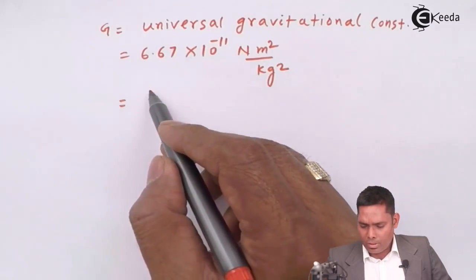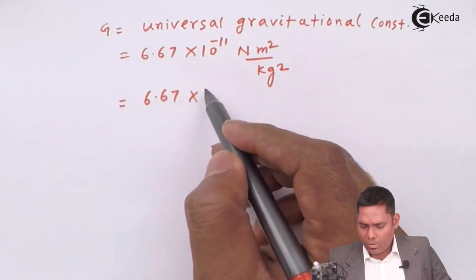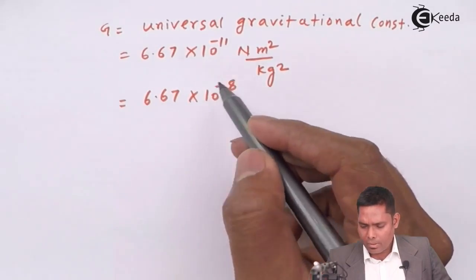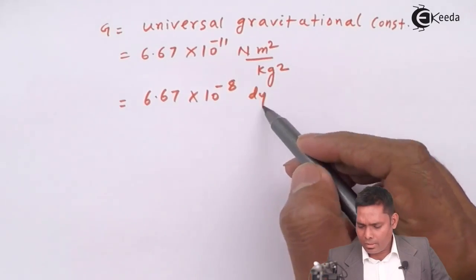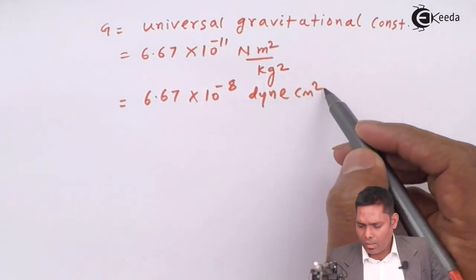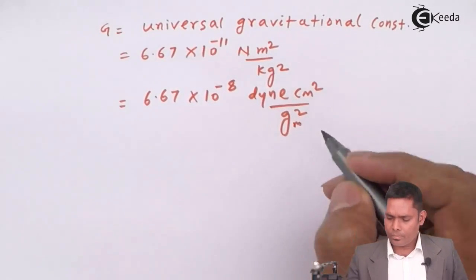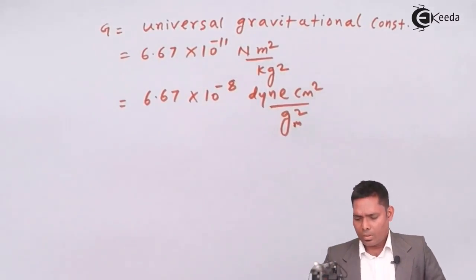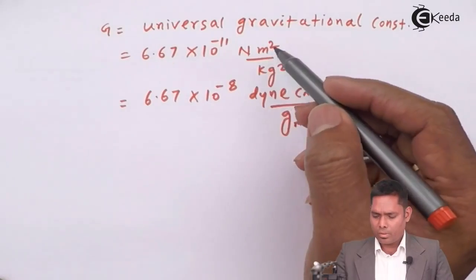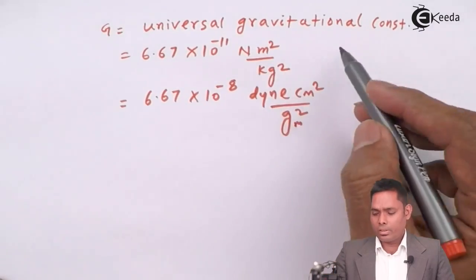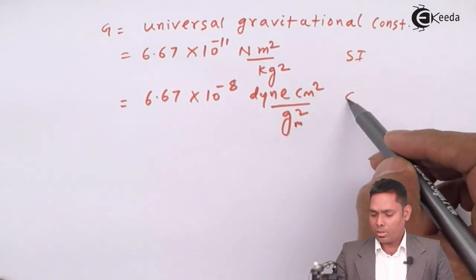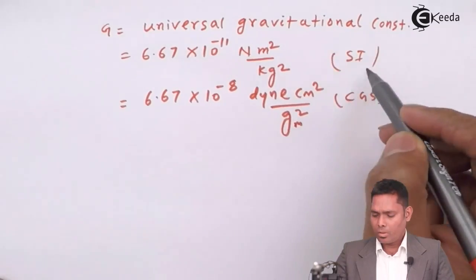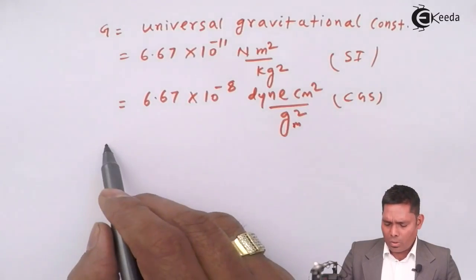In SI system of units it is 6.67 times 10 to the power minus 8, dyne centimeter square upon gram square. You can convert this into, this is in SI system, this is in CGS system, you can convert that.